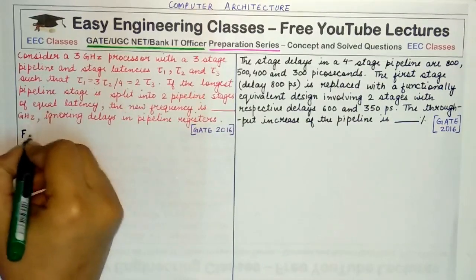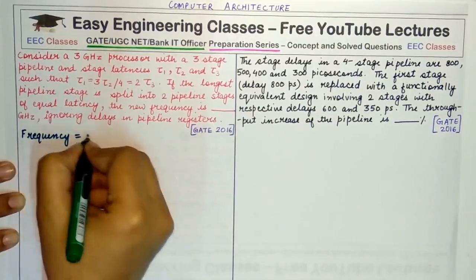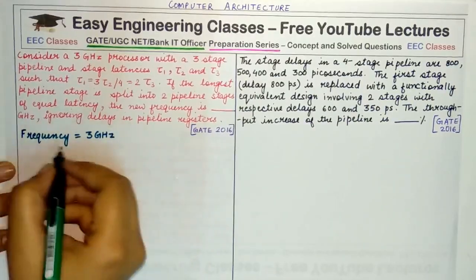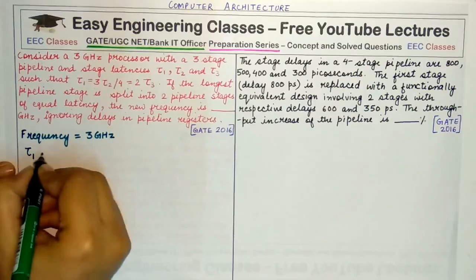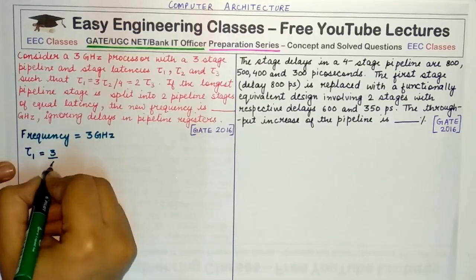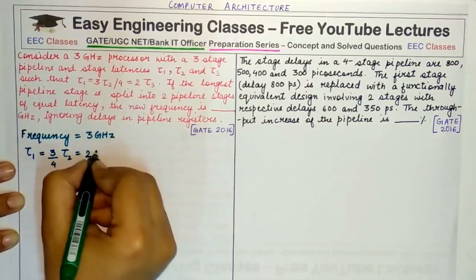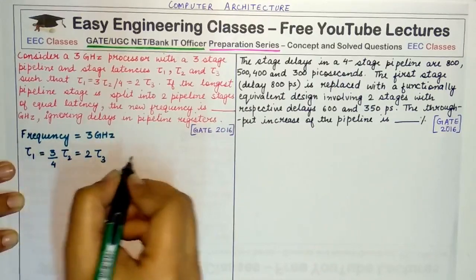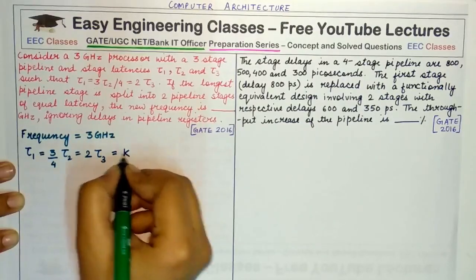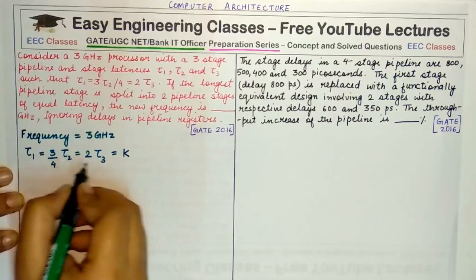Since initially you are given that the frequency of the existing 3-stage pipeline is equal to 3 GHz, and it is a 3-stage pipeline, the frequencies are given as τ1, τ2, τ3, and they hold the relation τ1 = 3/4 τ2 = 2τ3. So let us equate these three values to a constant or to a value K.